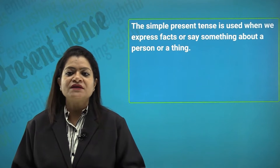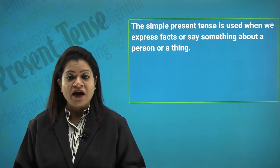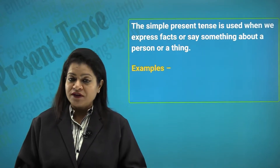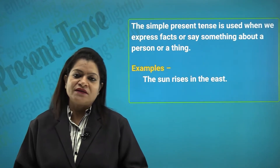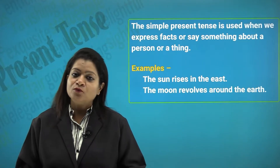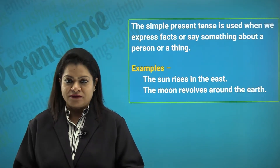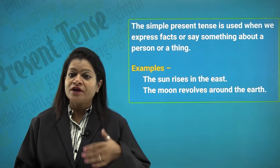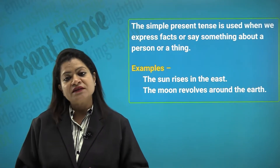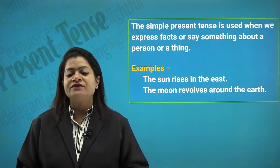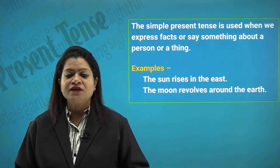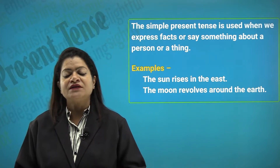The simple present tense is also used when we express facts or say something about a person or thing. For example: 'The sun rises in the east' — will that change? No. 'The moon revolves around the earth.' Scientific facts like 'water boils at 100 degrees' and 'water freezes at 0 degrees' express something which will never change. Hence, the present indefinite tense is used.